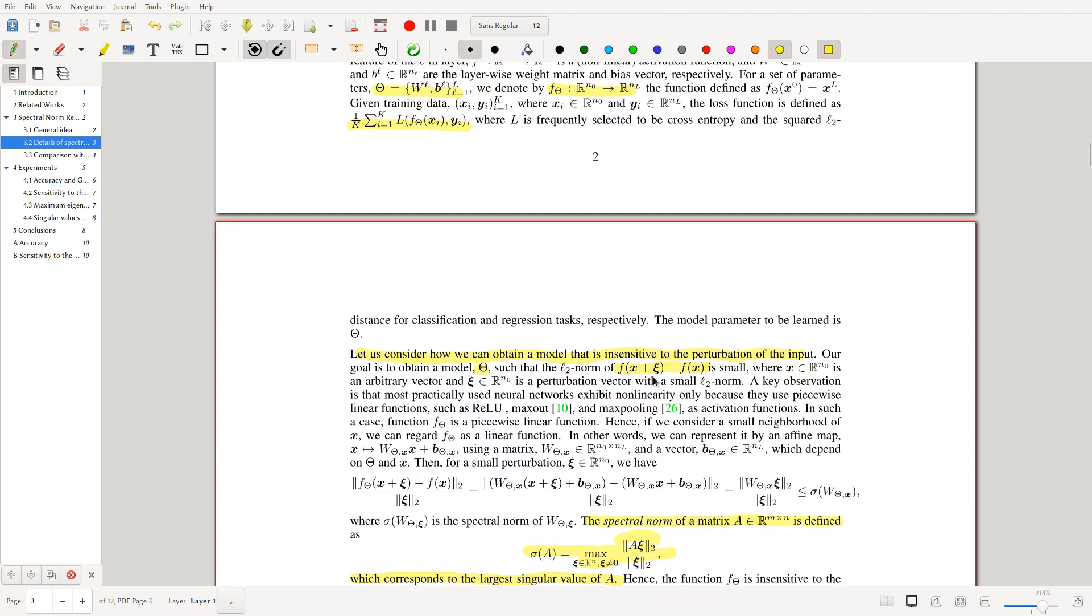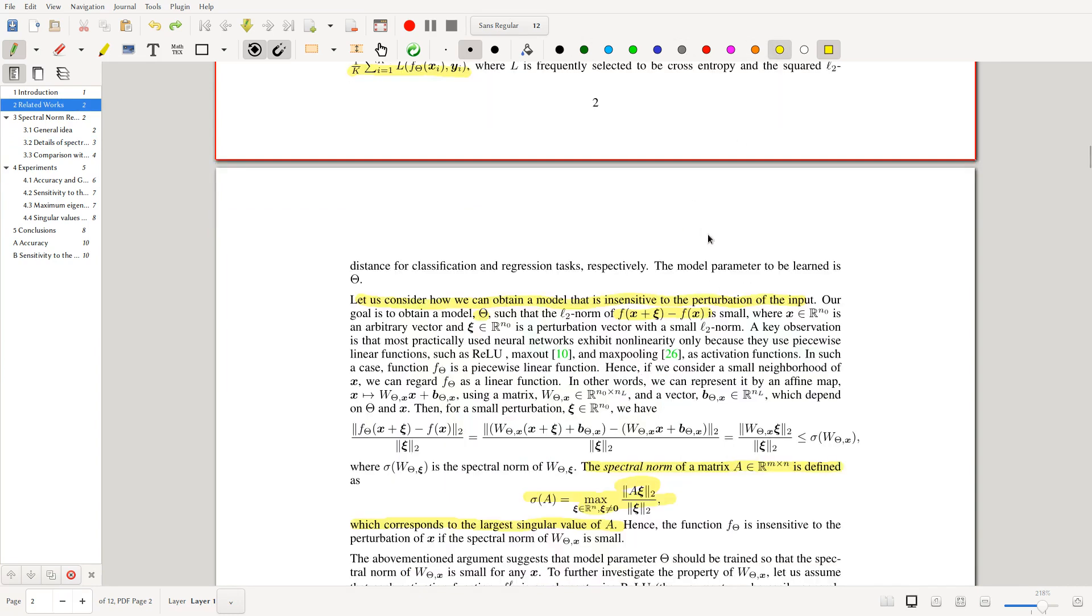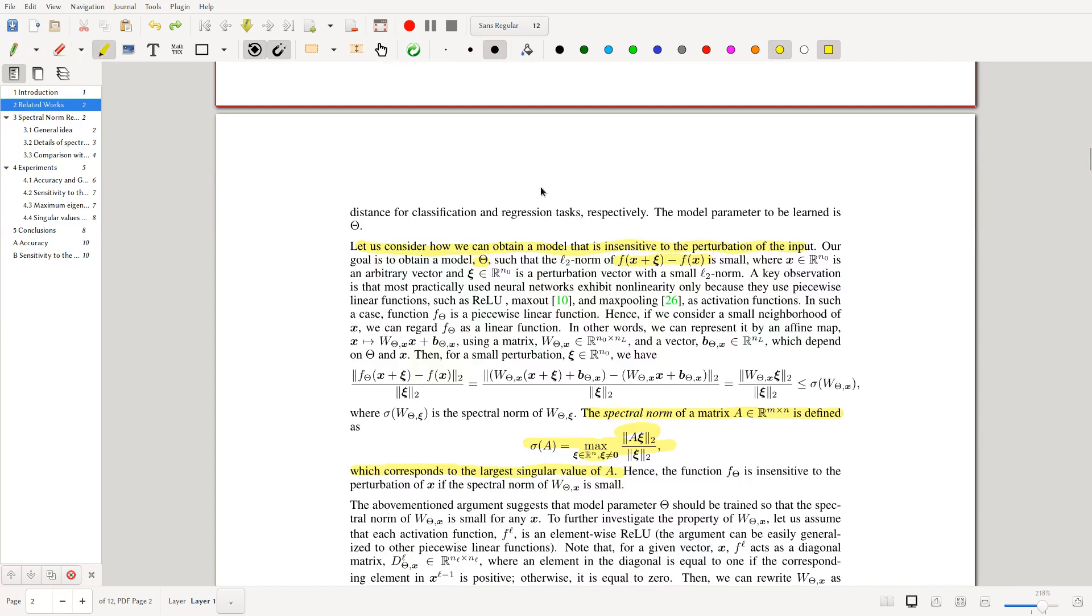So here they say, let us consider how we can obtain a model that is insensitive to the perturbation of the input. They want to obtain a model theta such that the L2 norm of this quantity is small. And this should remind you of something we've done before, right? Where we look at this value F of X plus delta minus F of X, and we look at some norm. This obviously is very similar to what we were doing with the Lipschitz continuity paper, okay? So this should tie in nicely. The idea is that X is in N0 and then we have an arbitrary vector which is small, right? Because these perturbations, the idea is that they're small but even though they're small, they create a large kind of explosion in the function.